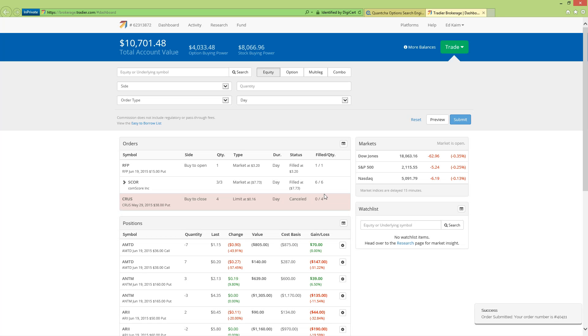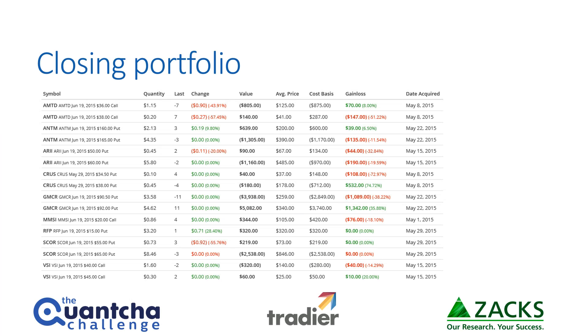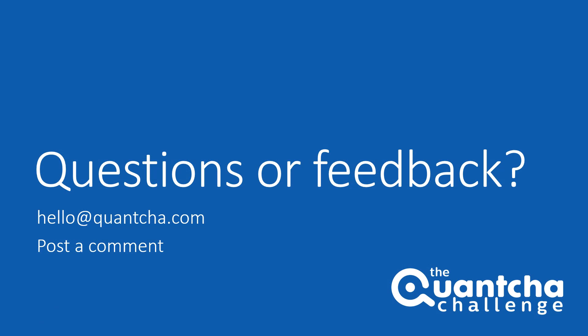We are now the proud owners of a Resolute Forest put for the June time frame. Here's a look at our closing portfolio for this trading session — we're going to come back throughout the day and monitor the Cirrus Logic position since we need to close that if it's going to be in the money. Other than that, these positions are what we'll hold until next week. Everything we've got at this point expires June 19th, so come on back and join us again next week. If you have any questions or feedback, hit us up at hello@quantia.com or post a comment below. Thanks and happy trading!